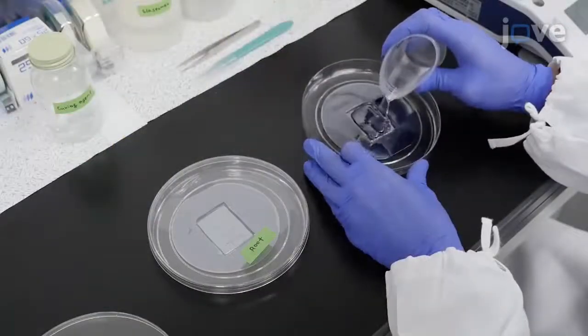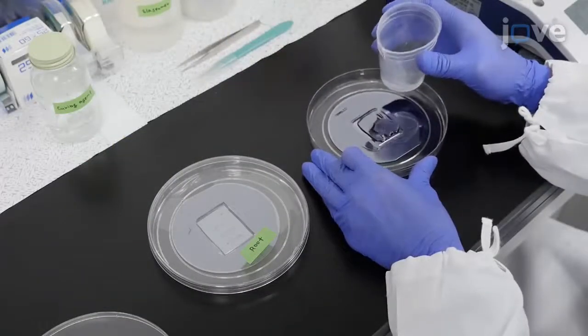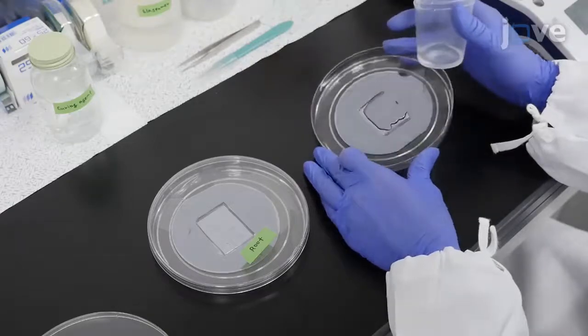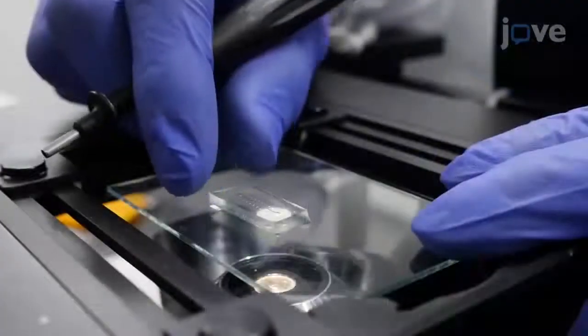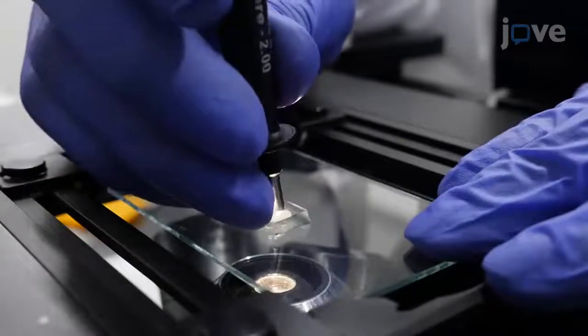To make a micro device designed for root hair examination, two molds are loaded and cured. When punching out the channel holes, use a 2-millimeter punch.